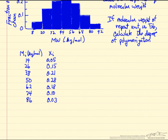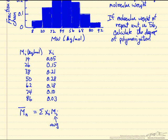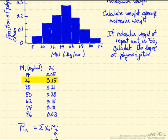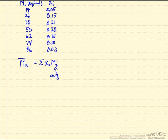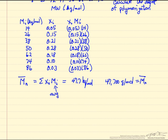We want to calculate the number average molecular weight. This is equal to the sum of the fraction times the molecular weight of that fraction — the average for each range. For example, from 8 to 20 the average is 14; from 20 to 32 the average is 26, halfway in between. Multiplying these weight fractions by the midpoint averages and summing gives 47.7 kilograms per mole, or 47,700 grams per mole — the number average molecular weight.